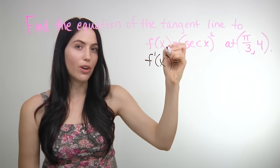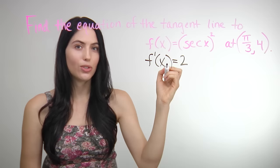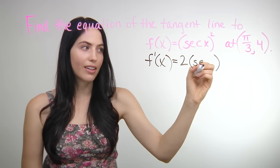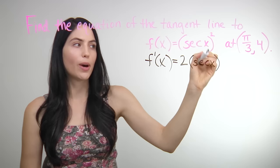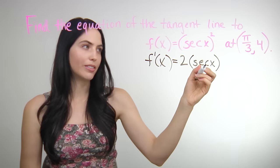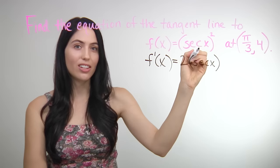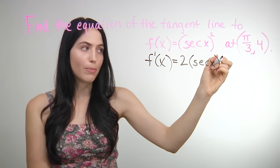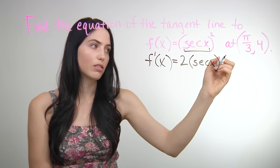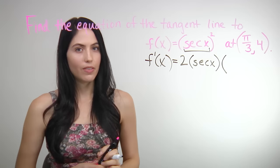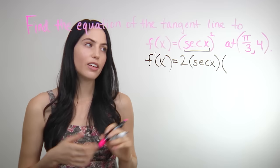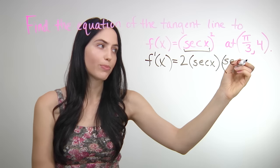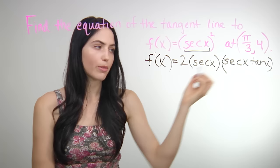Use the chain rule because you don't just have x inside — you have some other x expression inside a power. First, take the derivative of the power using the power rule: the 2 power comes down out front as a coefficient, 2. Secant x is still there, and this power 2 is reduced by 1 — so the power is 1, which we don't need to write. You're not done, because since there's a secant x, you also need to multiply by the derivative of secant x — the inside function. The derivative of secant x is secant x times tangent x. So this is your f prime of x.